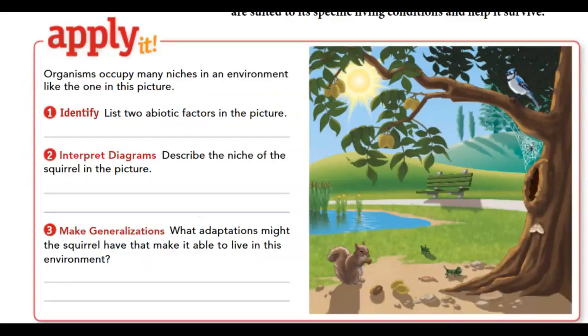Apply It: organisms occupy many niches in an environment. Question one asks to identify two abiotic factors in the picture. Remember, biotic factors are living or were once living, so abiotic factors are things that are not living and never have been. In this picture, some abiotic factors include sunlight and water.